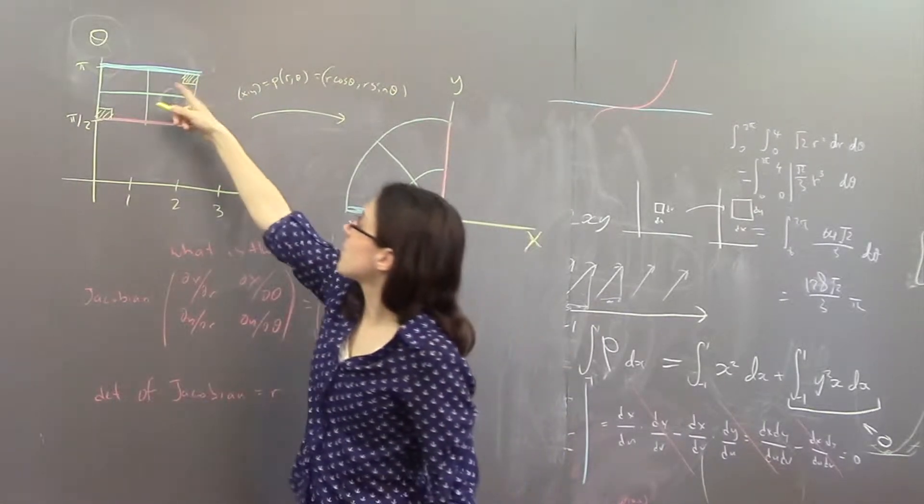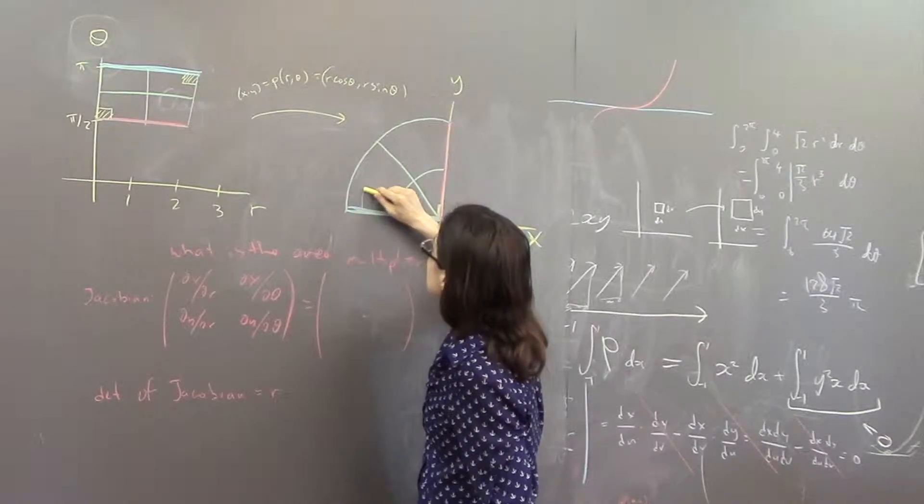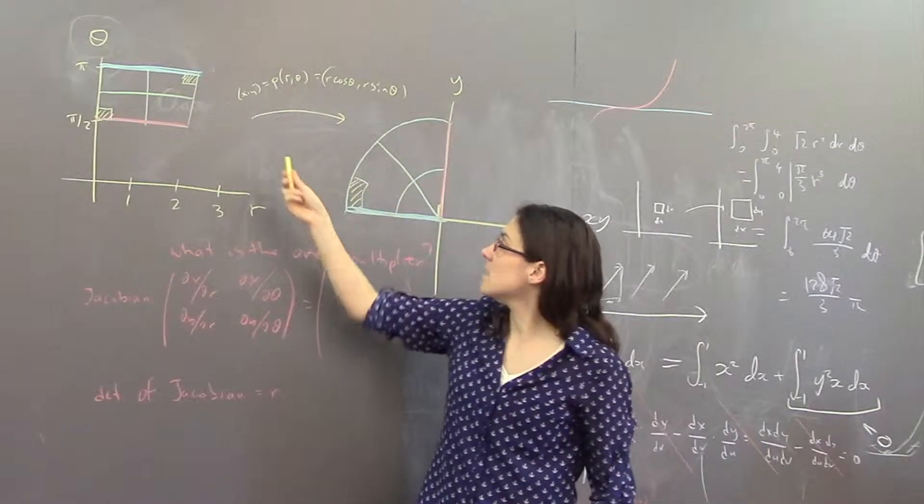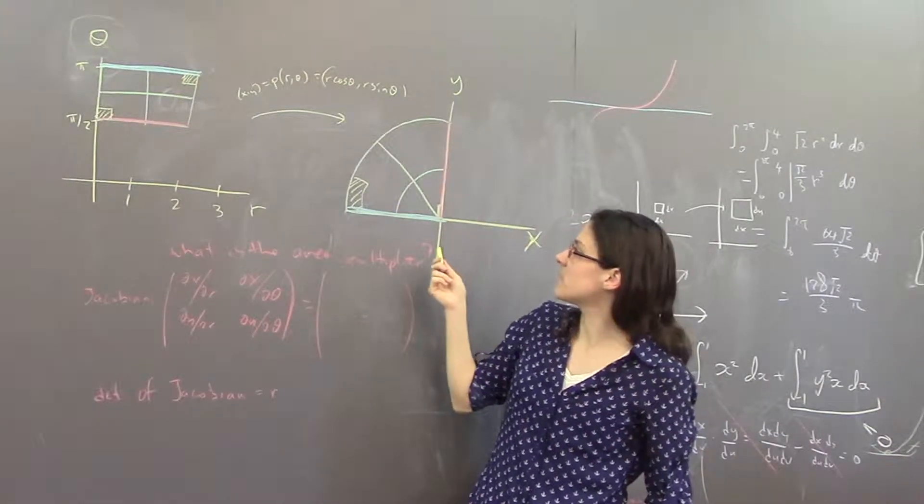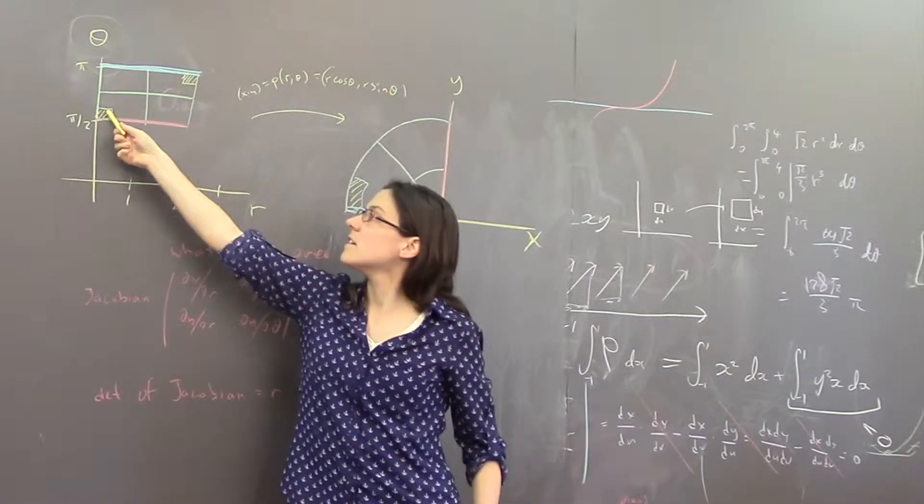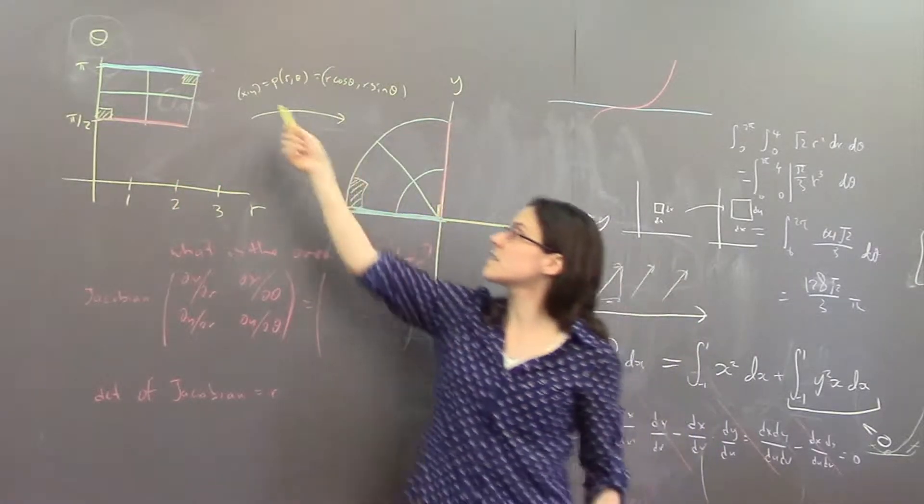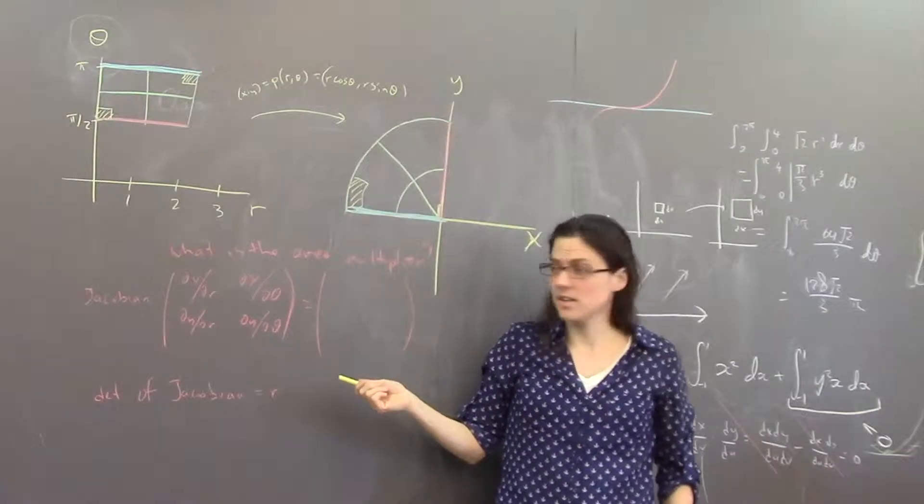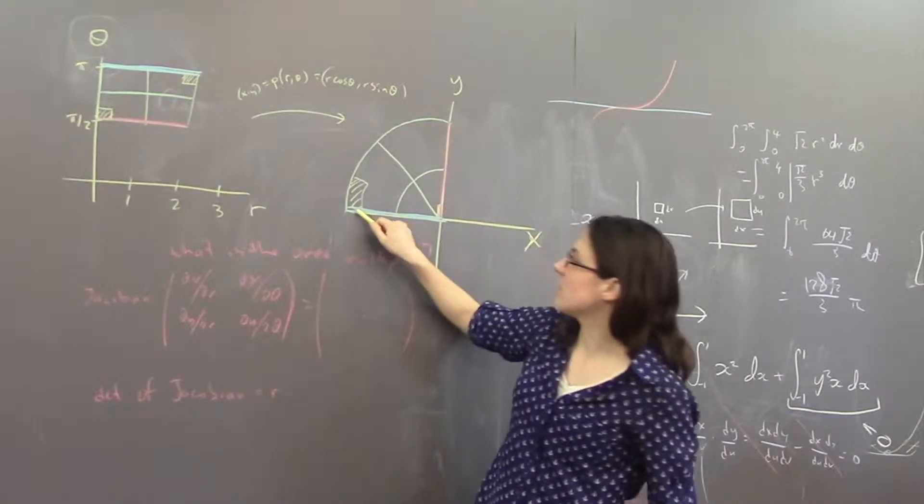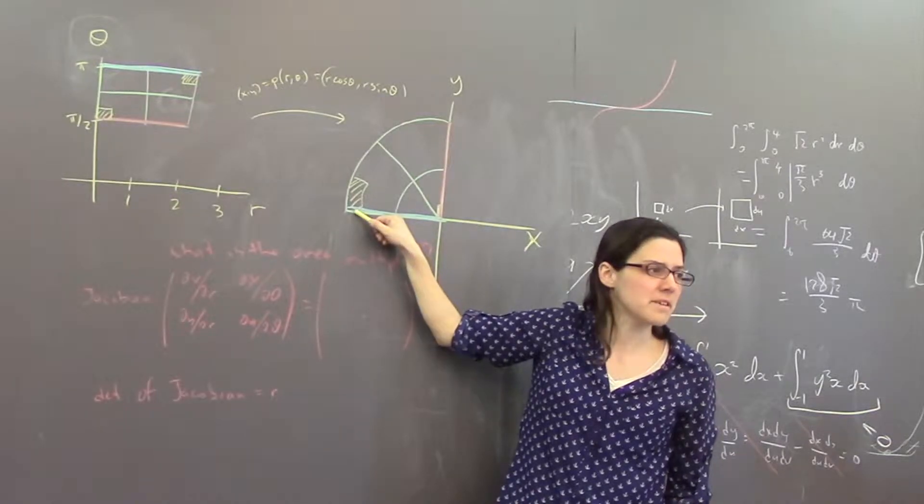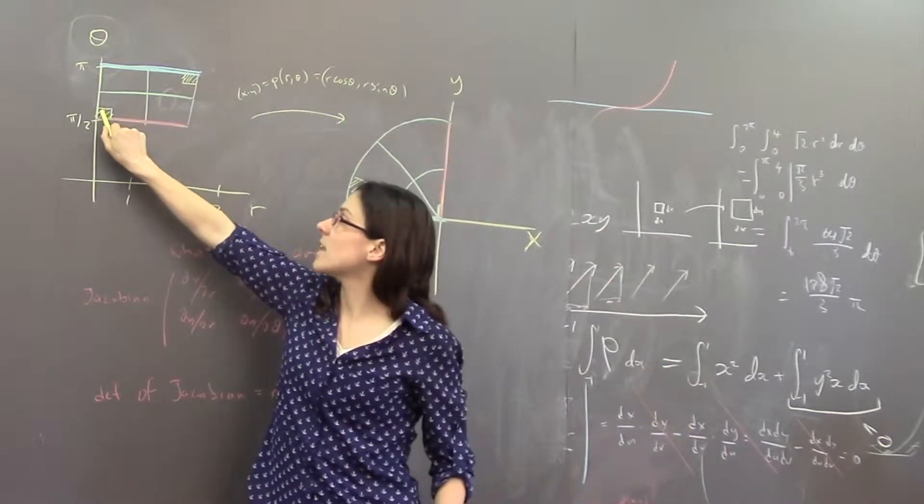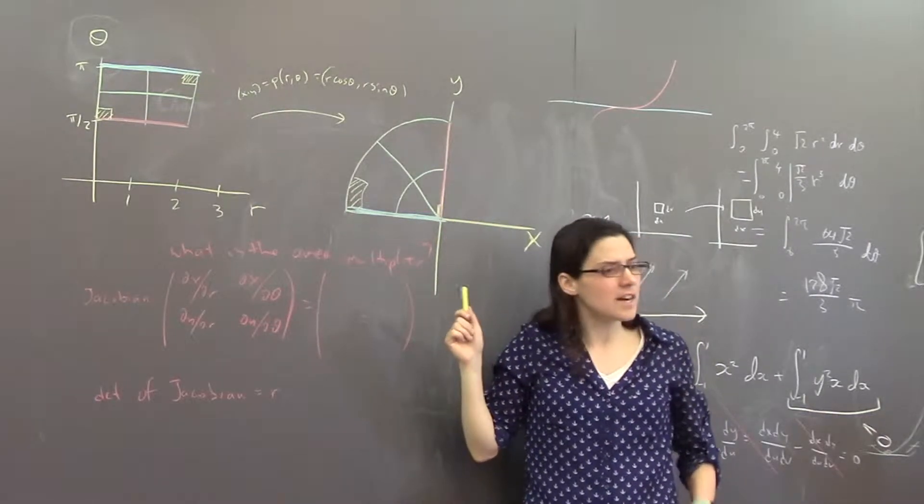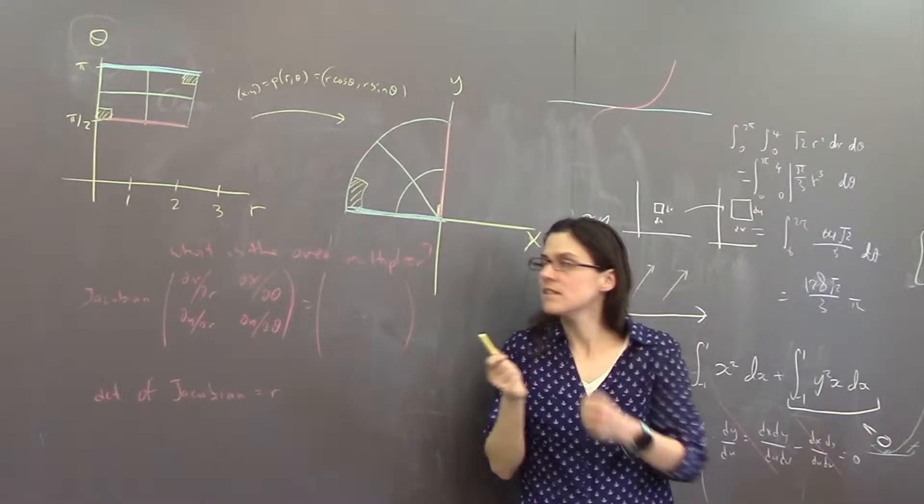I've tried to draw this roughly to scale. So this thing got a lot smaller but this thing got bigger. The area expansion factor is actually r. In this case r equals 2, so it got about twice as big, that looks plausible. Here the expansion factor is 0, it got roughly 0 times as big, that seems plausible. But it's different in different places.